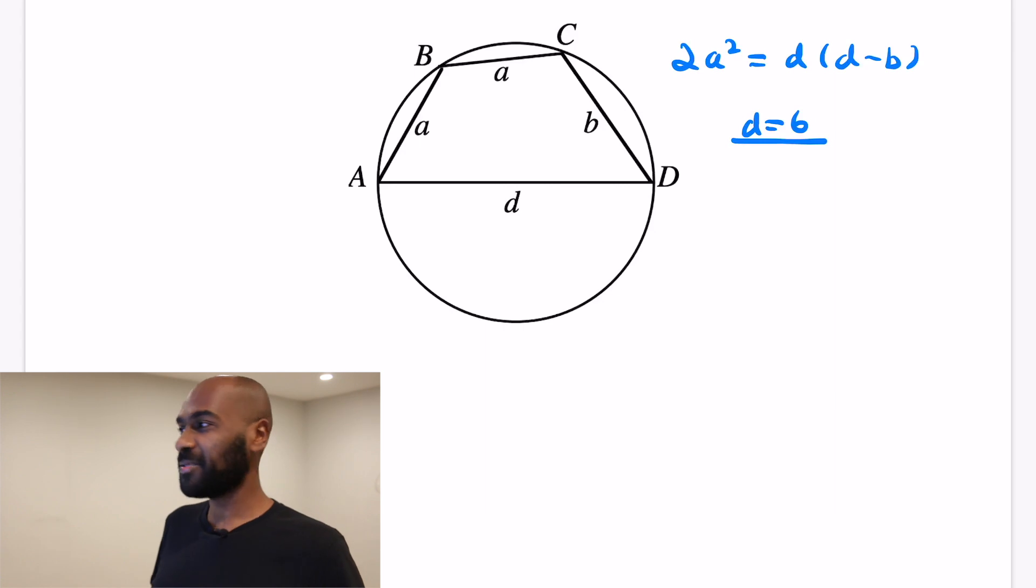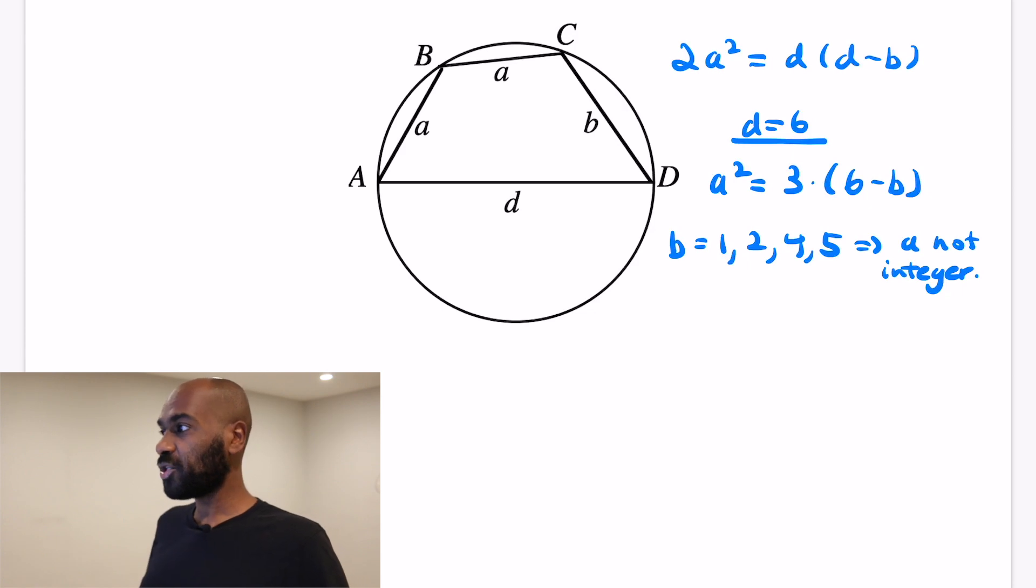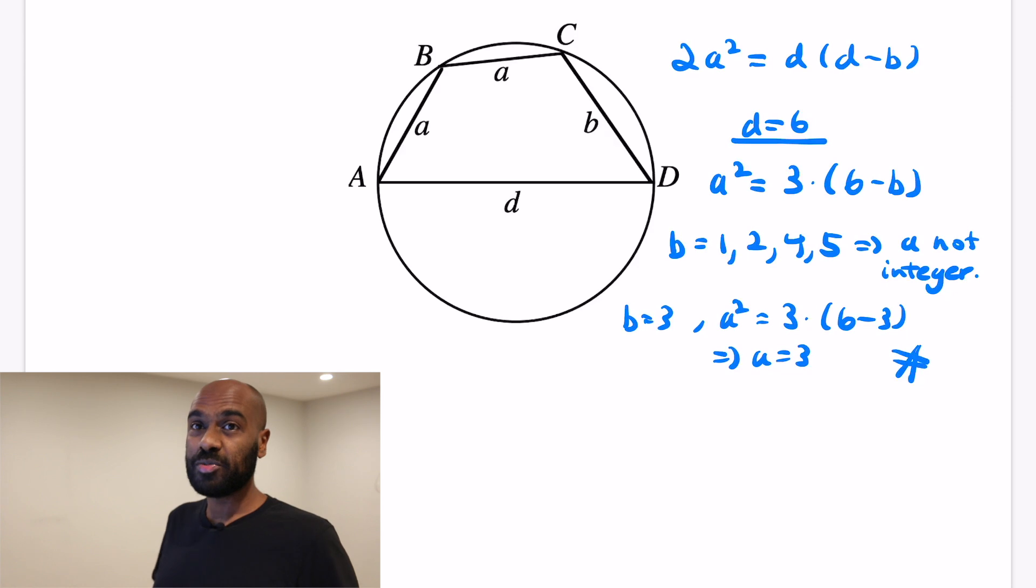Let's look at d possibly being 6. So if we simplify this, we'll get a squared is 3 times the quantity 6 minus b, factoring out that 2 on each side. So let's play the same type of game that we did in the d equals 4 case, analyzing the different values. Now, if you iterate through all the possible values that b can take on between 1 and 5, you'll quickly realize that for many of the values, the values 1, 2, 4, and 5, a is not going to be a perfect square. So a squared is not going to be a perfect square. So a is not going to be an integer, and so we can rule those out. That only leaves the possibility that b is 3, and then we're in the same conundrum that we had in a previous case, where we get a squared then is 3 times 3, which forces a to be 3, which means a is b, and that's not possible.